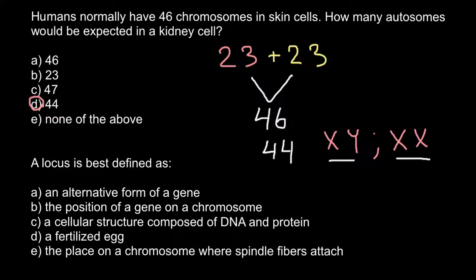Next question. A locus is best defined as — and here are five answers to choose from. Answer A: an alternative form of the gene. B: the position of the gene on the chromosome. C: the cellular structure composed of DNA and protein. D: a fertilized egg. And E: the place on the chromosome where spindle fibers attach.